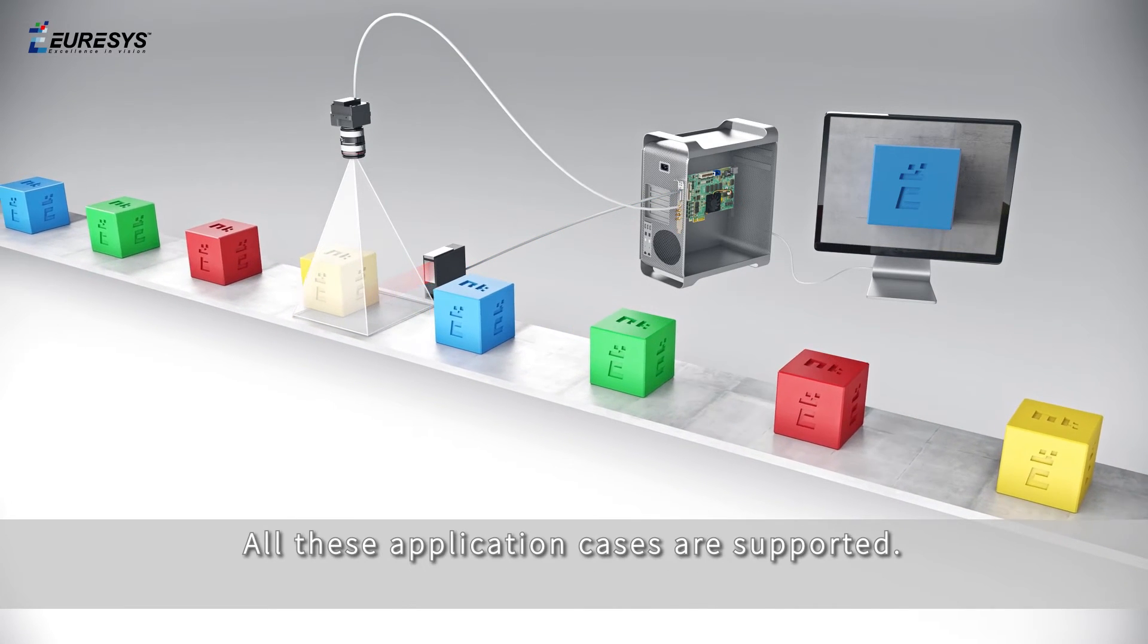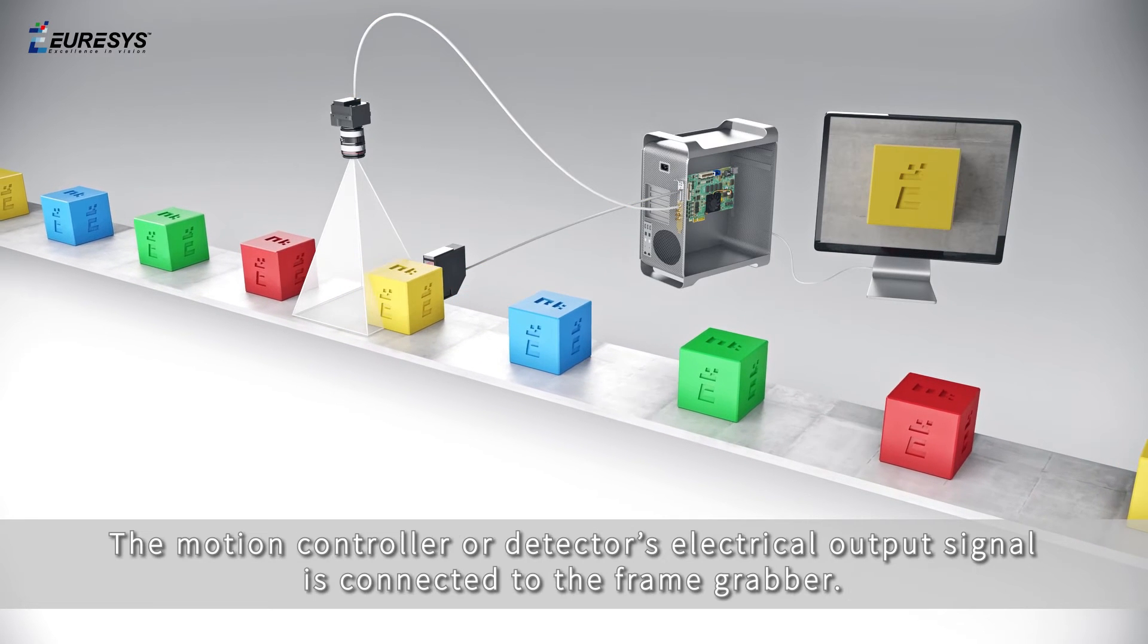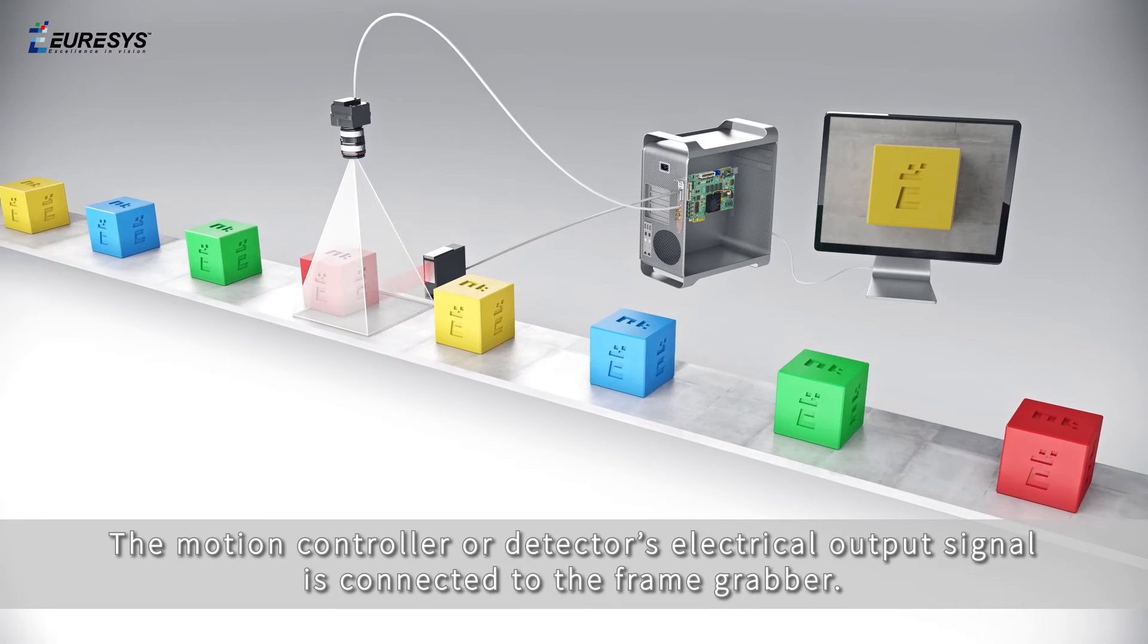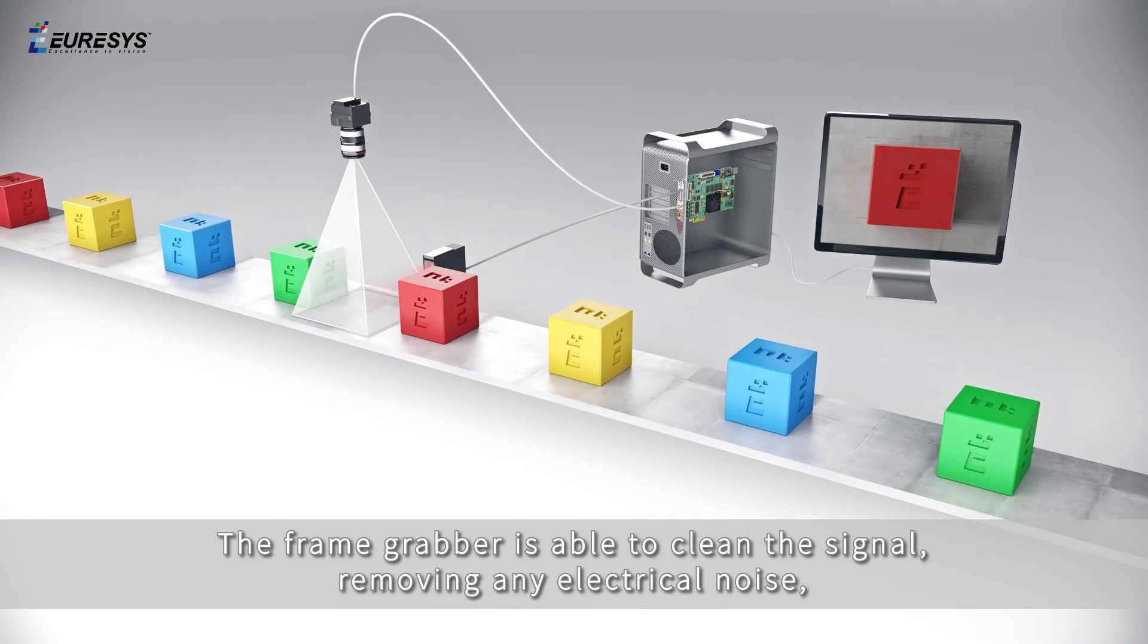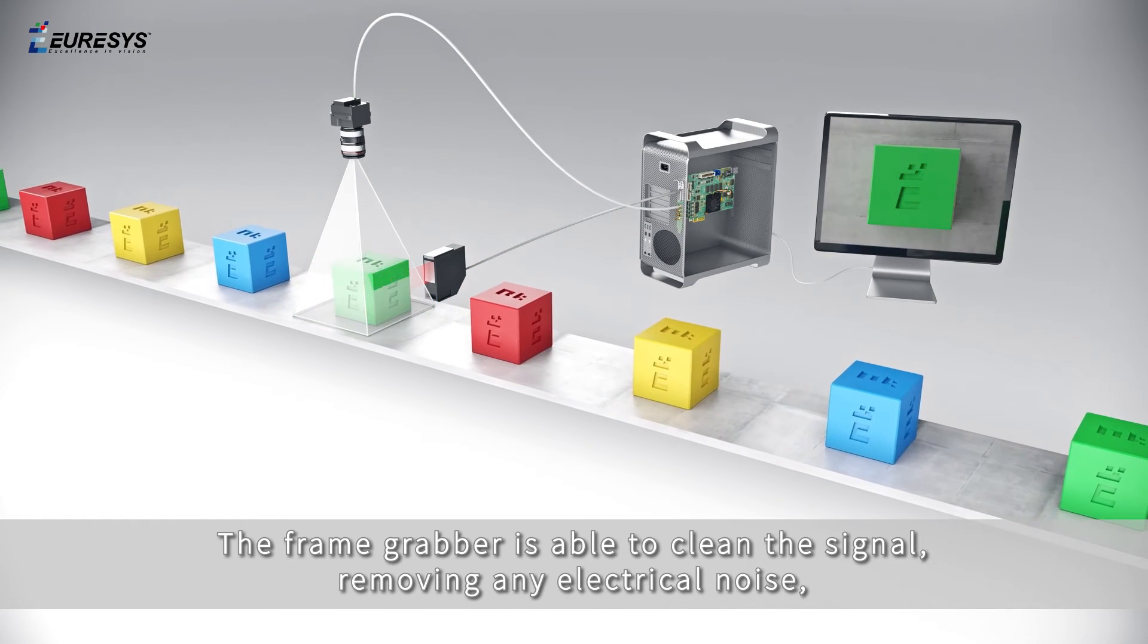All these application cases are supported. The motion controller or detector's electrical output signal is connected to the frame grabber. The frame grabber is able to clean the signal, removing any electrical noise.